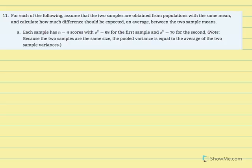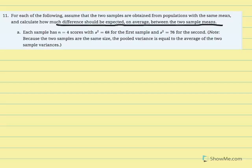Number 11: for each of the following, assume that the two samples are obtained from populations with the same mean — that's the null, mu1 minus mu2 equals 0, or mu1 equals mu2. Calculate how much difference should be expected on average between two sample means. This is essentially asking for the estimated standard error of the mean difference. You need to get used to being asked to calculate these statistics without them being as explicit as we're used to.